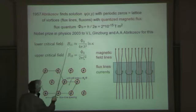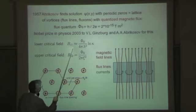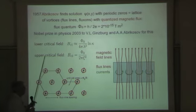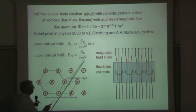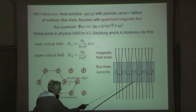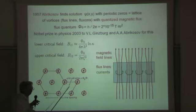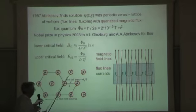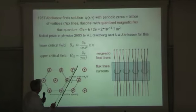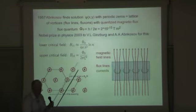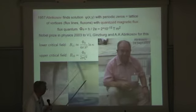Abrikosov was then allowed to publish his paper. He had two critical fields, the lower and upper critical field. Below the lower field, the superconductor is in the Meissner state which expels all magnetic flux. Between these two fields, the magnetic flux partly penetrates in form of vortices. These vortices usually arrange into a regular triangular lattice, not always, and they can also be pinned as I will mention soon. When the applied field is larger than the upper critical field, the superconductor is in the normal state.